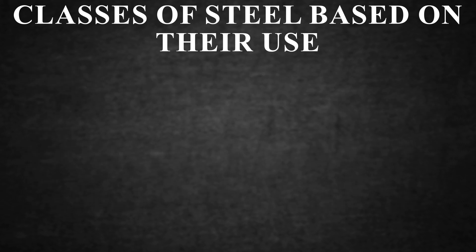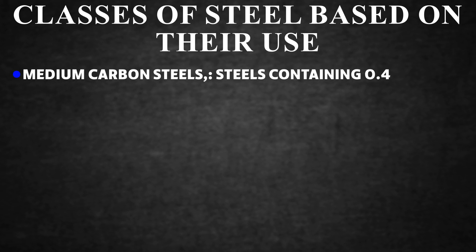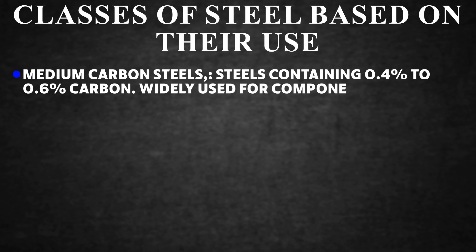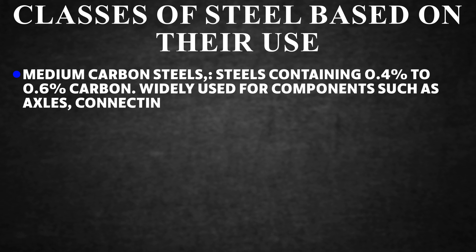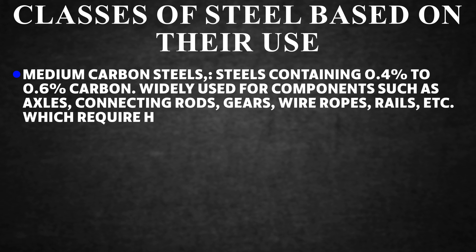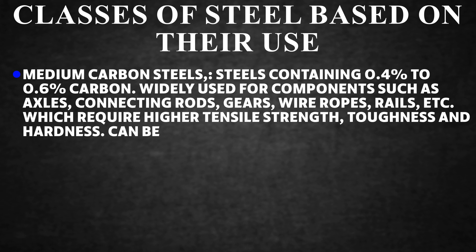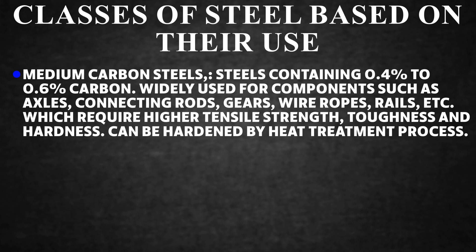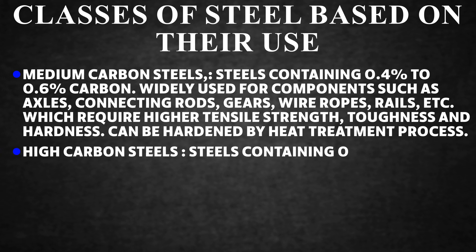Medium carbon steels contain 0.4% to 0.6% carbon and are widely used for components such as axles, connecting rods, gears, wire ropes, and rails, which require higher tensile strength, stiffness, and hardness. They can be hardened by heat treatment. High carbon steels contain 0.6% to 1.5% carbon and are used to make cutting tools.